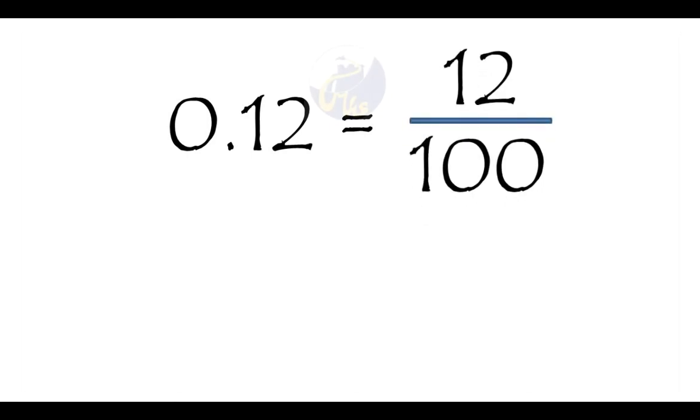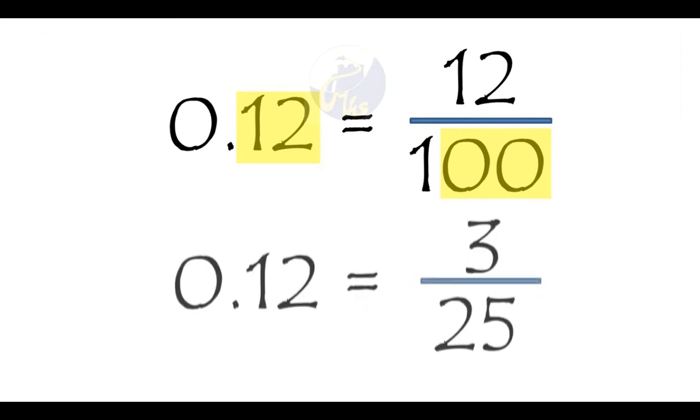The 12 in the numerator comes from the 1 and 2 in the decimal. The hundred is also related to the decimal because it ends in two zeros, which is linked to the fact that there are two digits after the decimal point. There are other ways to explain why it's a hundred as well, but you should be familiar with some pattern that links the two. The final step is always to simplify, so in this case you get 3 twenty-fifths.